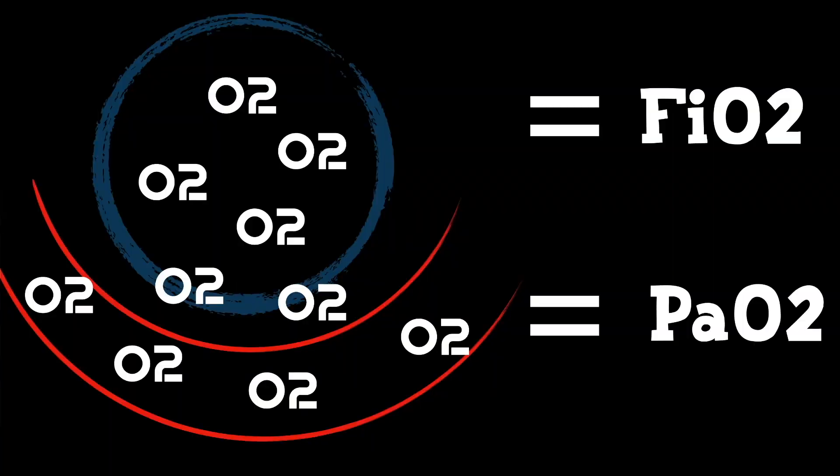The final step in the Berlin Criteria is evaluating something called the PF Ratio. That stands for PaO2, which is the partial pressure of oxygen in the arteries, and FiO2, which is the fraction of inspired oxygen. Essentially what we're asking is how much of the oxygen that we're giving is actually making it into the patient's blood. Let me show you a cool experiment.